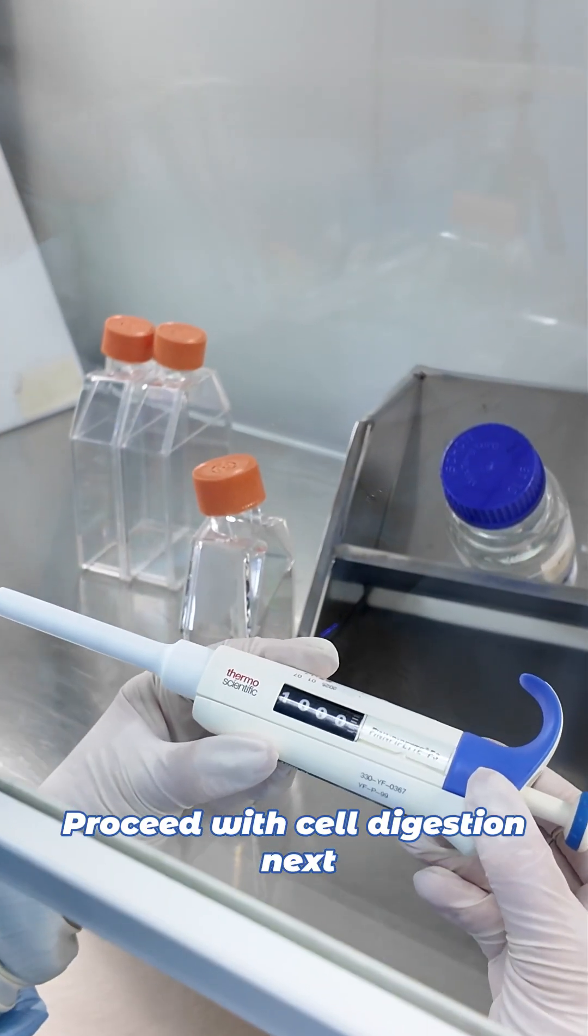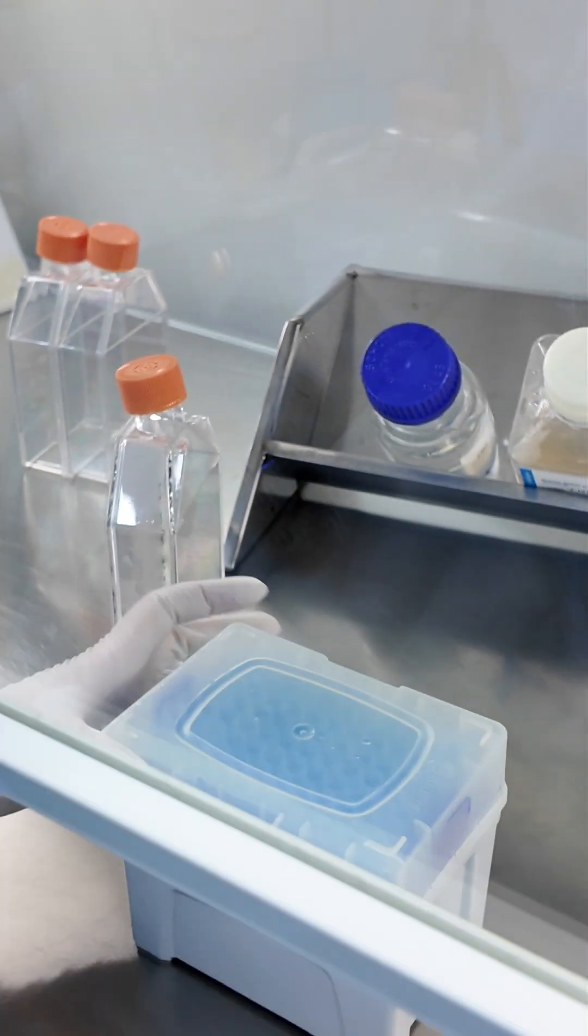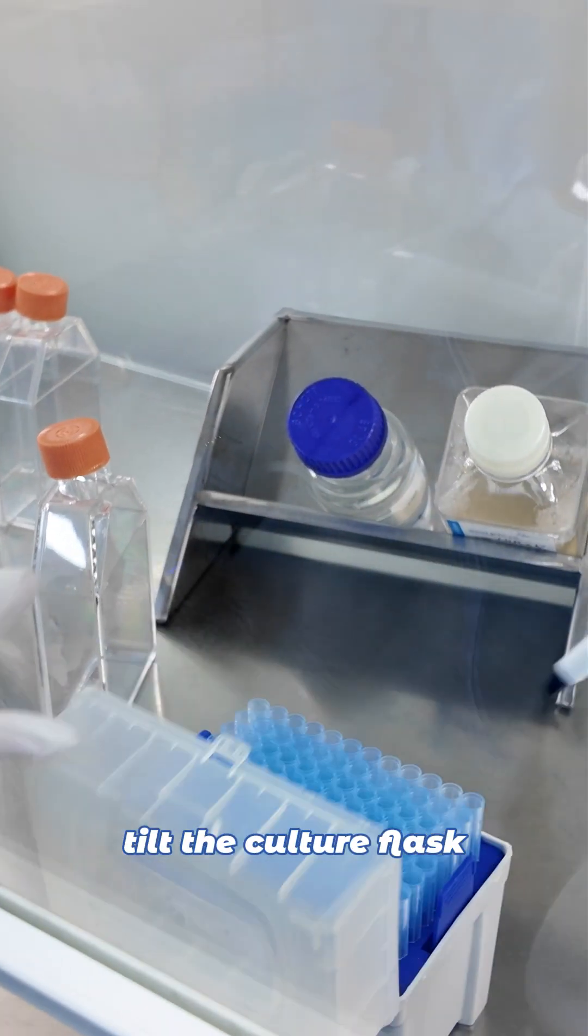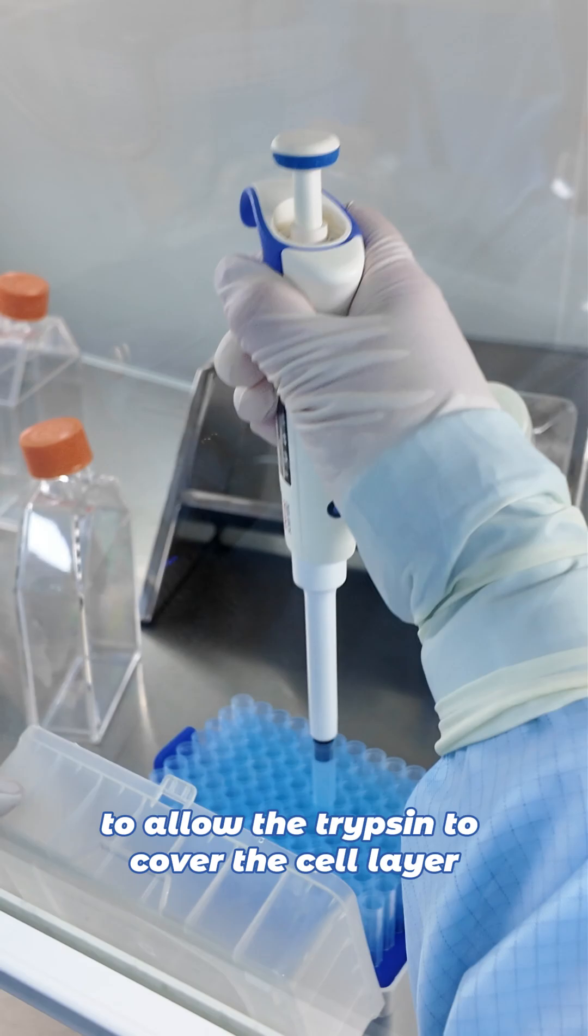Proceed with cell digestion next. Add trypsin and tilt the culture flask to allow the trypsin to cover the cell layer.